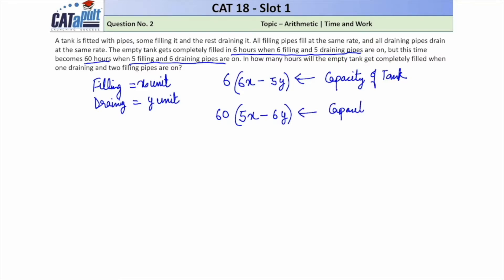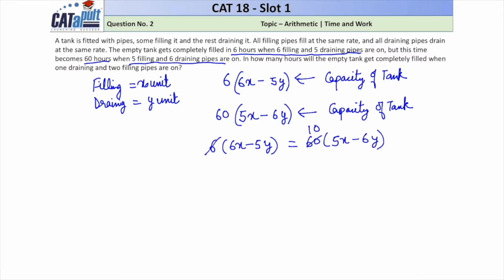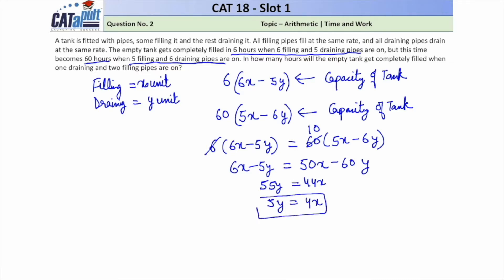Since both expressions equal the tank's capacity, we can equate them: 6(6X − 5Y) = 60(5X − 6Y). Dividing both sides by 6 gives 6X − 5Y = 10(5X − 6Y), which simplifies to 6X − 5Y = 50X − 60Y. Solving further: 44X = 55Y, which gives us 5Y = 4X. This is our key relationship.